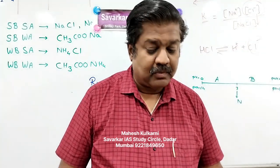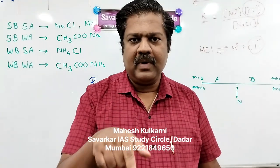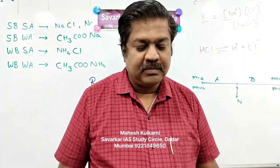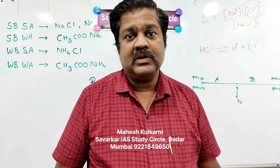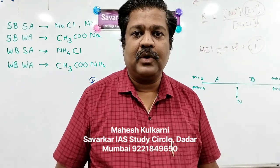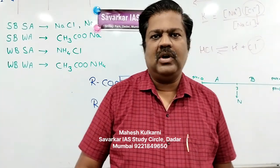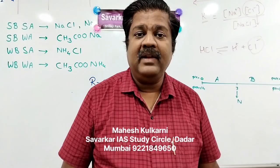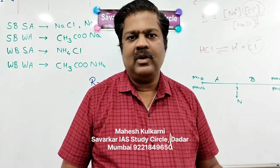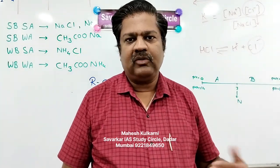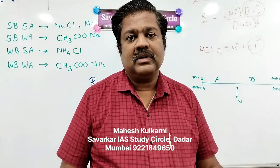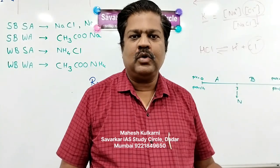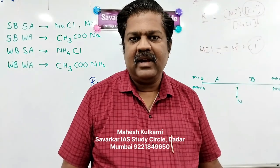The answer is A, Haber's process, but let us continue discussing. The Bosch process converts ammonia — obtained from Haber's cycle — into nitric acid. Together they are called the Bosch-Haber process, because German scientists were able to produce nitric acid from air and water. Prior to that, nitric acid was prepared from a salt called Chile saltpetre. Kjeldahl's method is used as an analytical method to detect nitrogen, not for industrial preparation. So the answer is A, Haber's process.